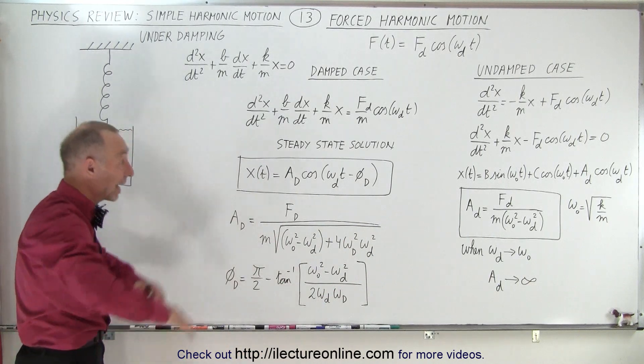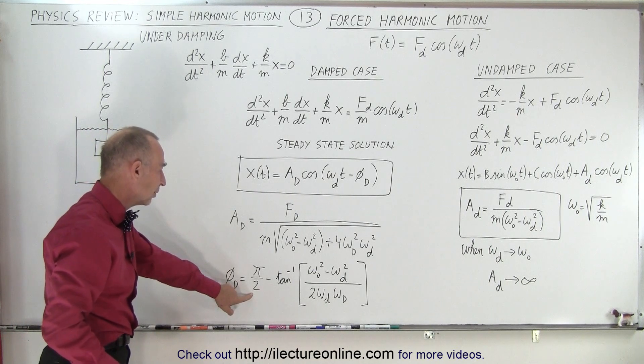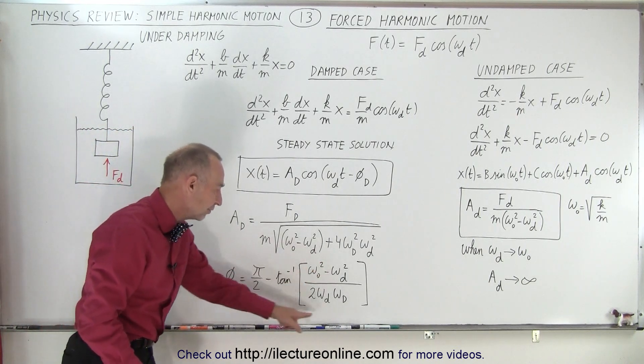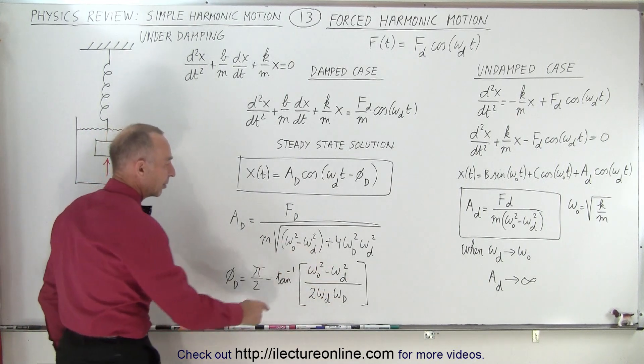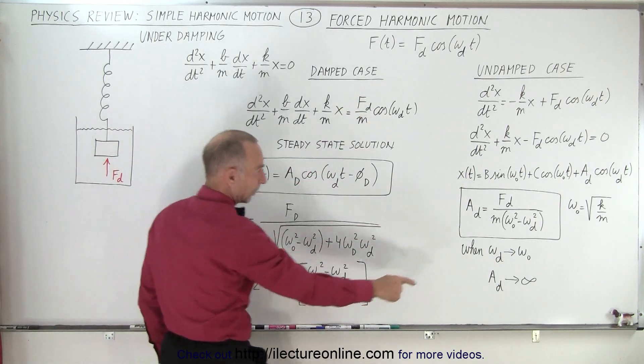The phase angle is determined by 90 degrees minus the arctangent of this ratio right here. Remember, this is the natural frequency that we have defined right here.